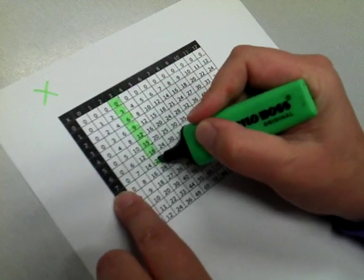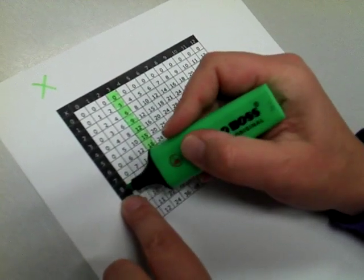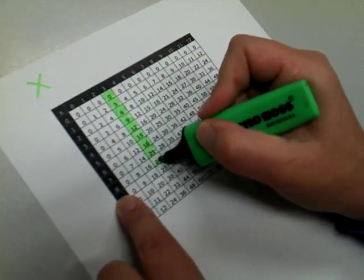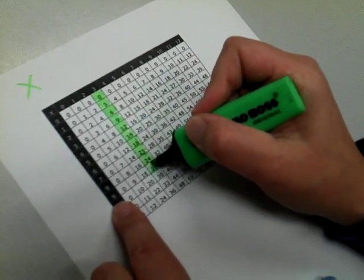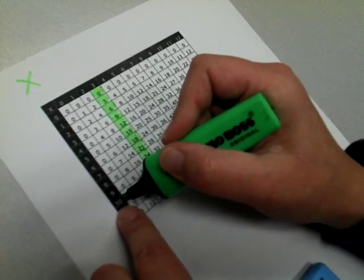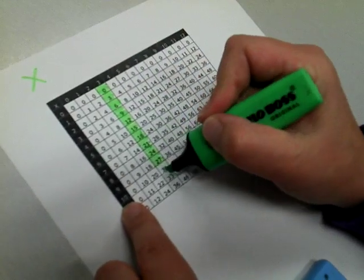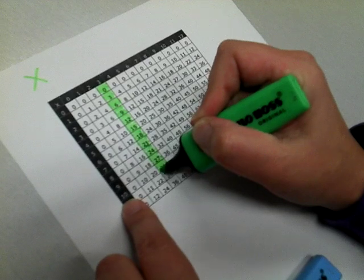Seven times three equals twenty-one, eight times three equals twenty-four, nine times three equals twenty-seven, and ten times three, which is where I'm going to stop, is thirty.